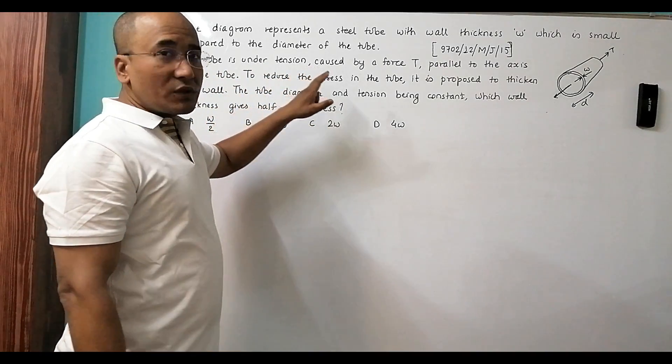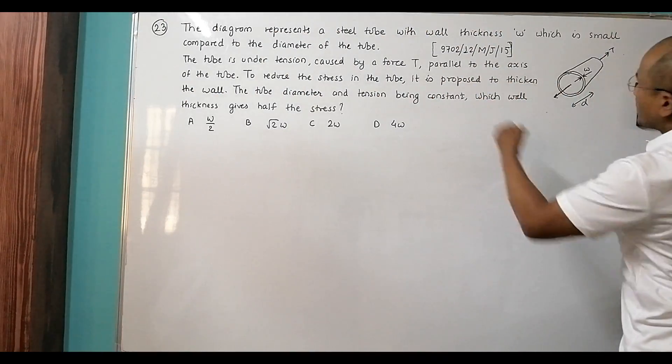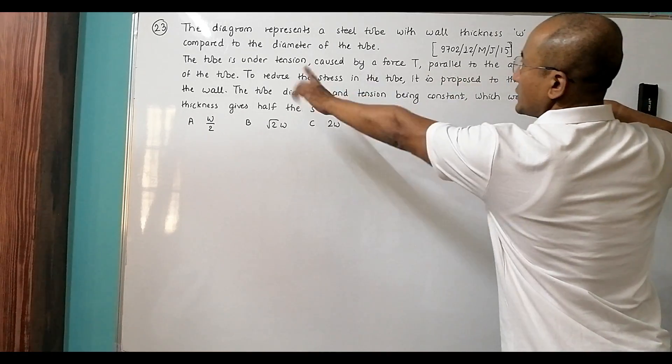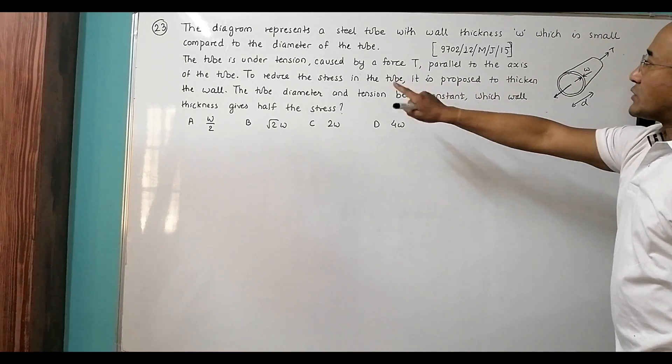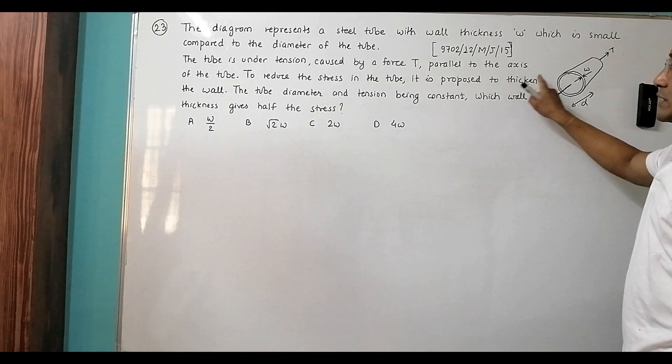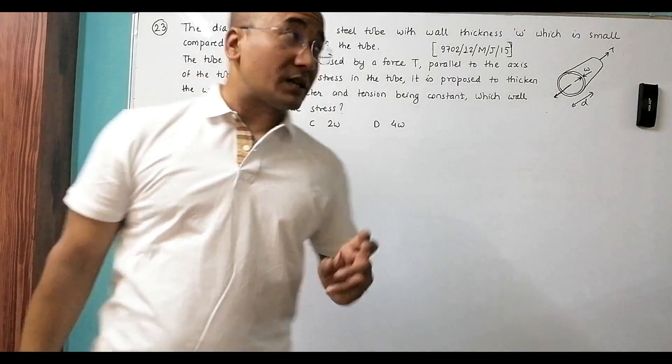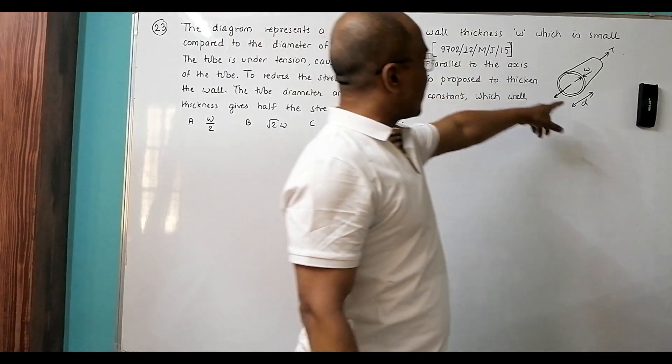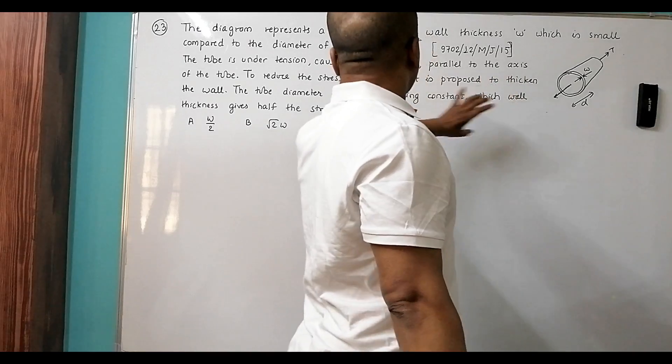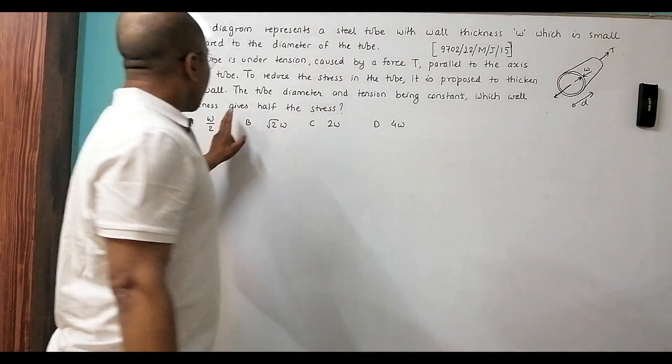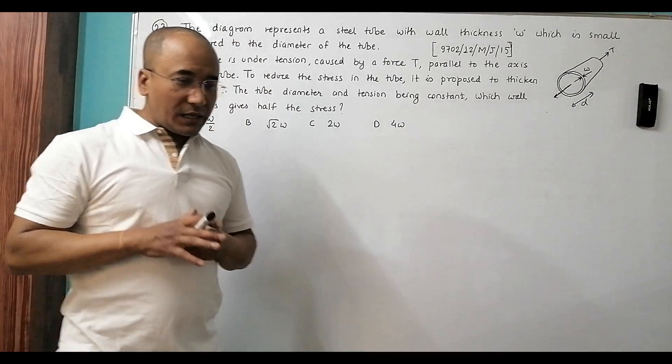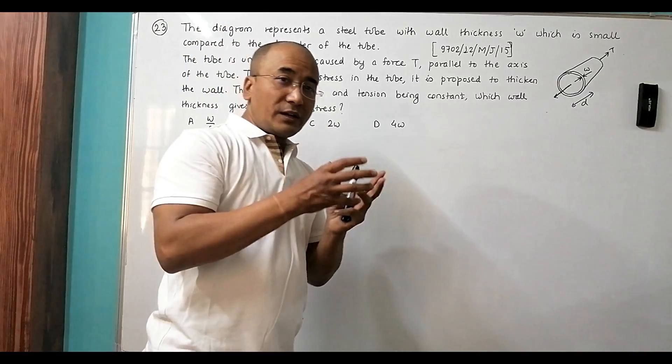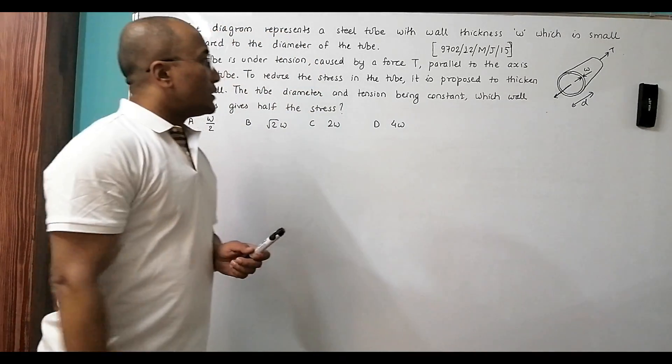The tube is under tension caused by a force T, which causes stress in the material. To reduce the stress in the tube, it is proposed to thicken the wall. The tube diameter and tension being constant. Which wall thickness gives half the stress? We have to reduce the stress by thickening the wall.